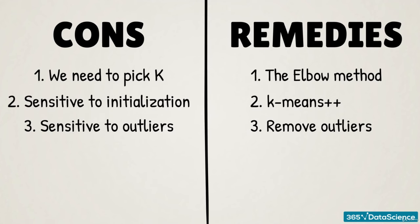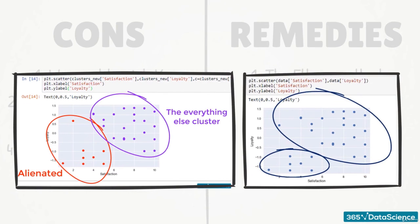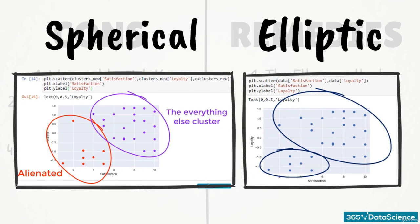A fourth con: k-means produces spherical solutions. This means that on a 2D plane that we have seen, we would more often see clusters that look like circles rather than elliptic shapes. The reason for that is that we are using Euclidean distance from the centroid. This is also why outliers are such a big issue for k-means.